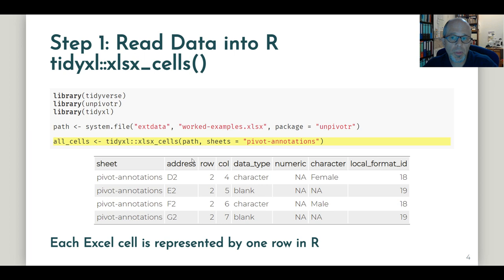This row contains the address in Excel style like D2, E2 and so on. But it also contains row and column as separate numbers or variables in R. We have the data type, and then we have a numeric and a character column for the actual values.